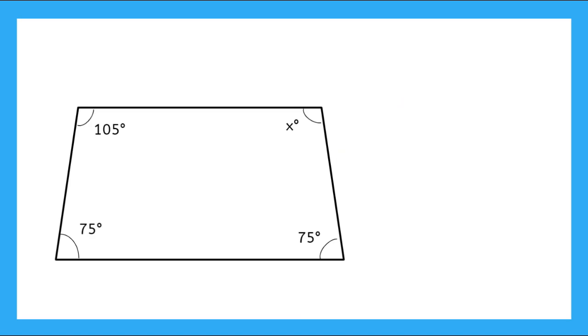So now I have a quadrilateral with three given angles and one mystery angle. How will I find my mystery angle? Well, I know the sum of all of my interior angles will be 360 degrees. So I can say 360 degrees is equal to my mystery angle plus 105 degrees plus 75 degrees.